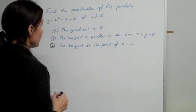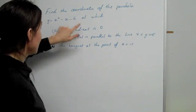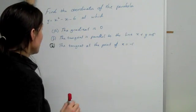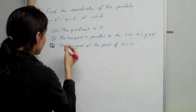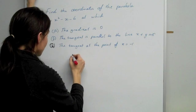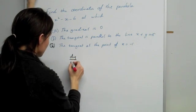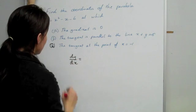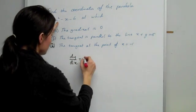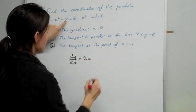If we want to find the coordinates of the parabola at which the gradient is 0, what we need to do is first we need to work out the gradient of that parabola. So we need to dy/dx it, and when we do that it becomes 2x - 1.